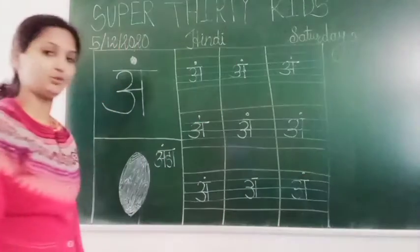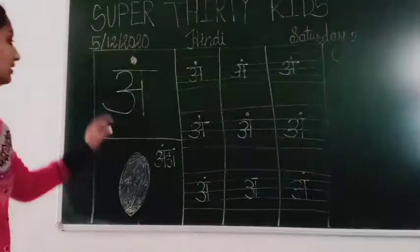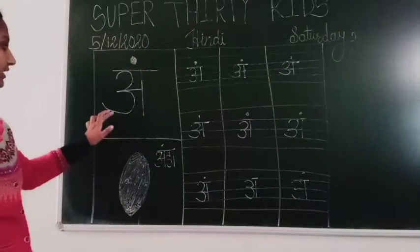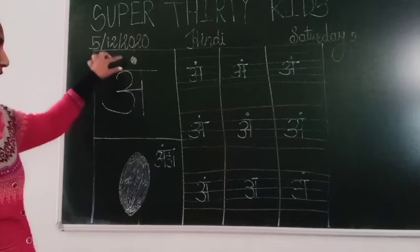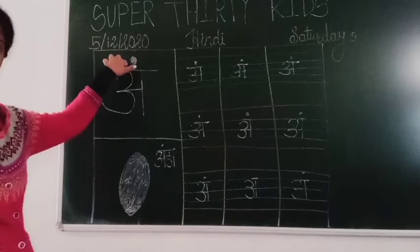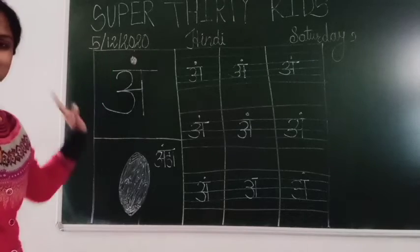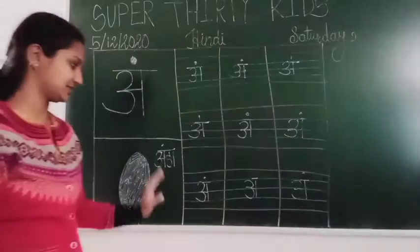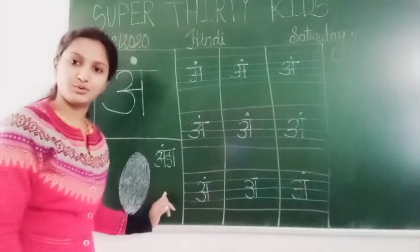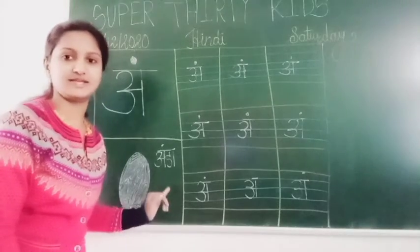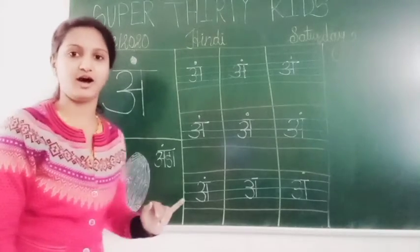How to write Ang? You have to write 'a' and put one dot upside. This is Ang. Ang se angur. Ang se anda.